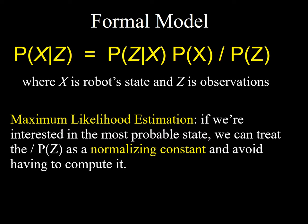Here's a version of Bayes' rule. You've probably seen it with A's and B's, but here I'm using a more common convention in robotics and engineering where X represents the state of the robot, and Z represents the observation. It's saying that the probability of the robot being in a certain state given the observations it's making equals the probability that it's making those observations given it's in that state, times the probability of being in that state, divided by the probability of those observations.